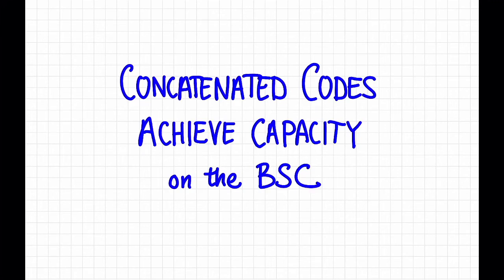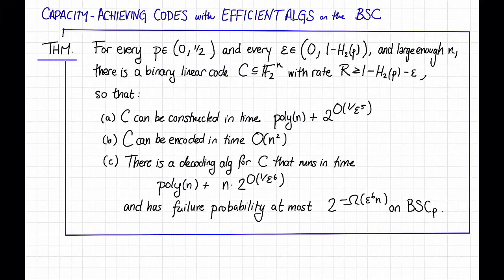In this video, we'll see how to achieve capacity on the binary symmetric channel with efficient algorithms using concatenated codes. In particular, we'll prove, or at least sketch the proof, of this theorem.